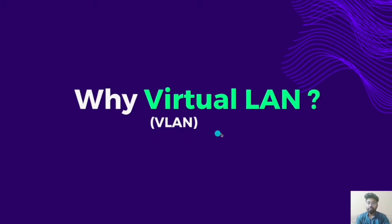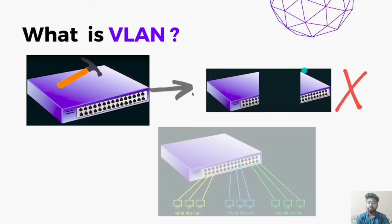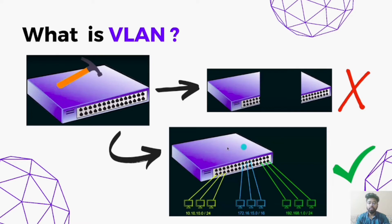Now suppose we need 5 LANs with few devices in each LAN — obviously we need 5 switches to create this scenario. But can this task be achieved with just 1 switch? That is what we will be discussing today in the topic VLAN. So instead of making a physical partitioning of a switch, we make a logical partitioning, creating multiple LANs inside a single switch — that is why we call it a Virtual LAN or VLAN. This logical partitioning is done at Layer 2 of the OSI model.